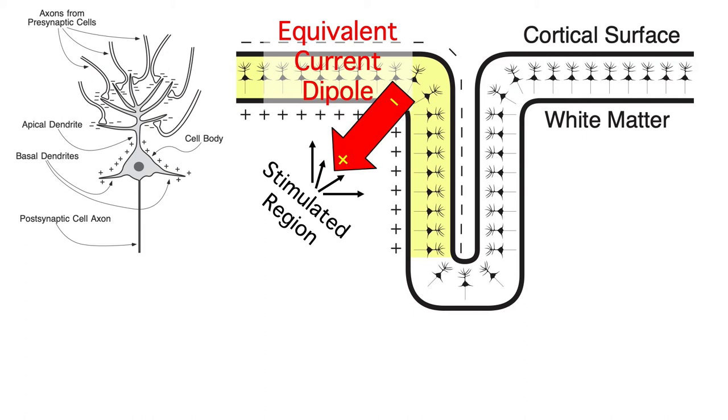But notice that the equivalent current dipole isn't a great representation of the individual neural dipoles. It has a 45 degree orientation in this example, whereas the individual neurons are all either vertical or horizontal. And the equivalent current dipole is centered in the white matter rather than in the gray matter. That's what happens when we try to simplify a complex pattern of neural activity with a single dipole.